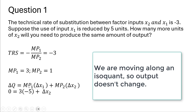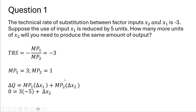The marginal product of input 1 is 3. We're told that input 1 is reduced by 5 units, so the change in input 1 is minus 5. The marginal product of input 2 is 1. Solving for the change in input 2, moving the 3 times negative 5 to the other side, the change in input 2 has to go up by 15 units to maintain the same output when input 1 is reduced by 5 units.